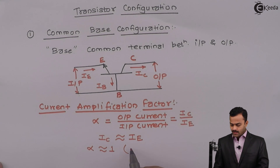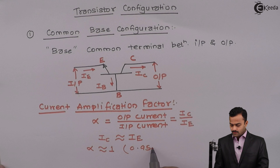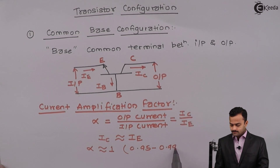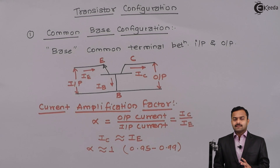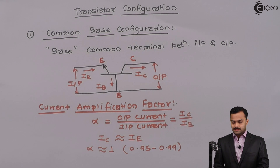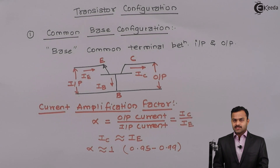Practically, the value of alpha ranges from 0.95 to 0.99, meaning significant current amplification is not happening in the CB configuration. So let's move on to the next configuration, which is Common Collector.